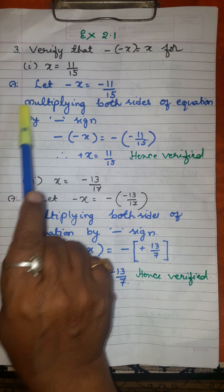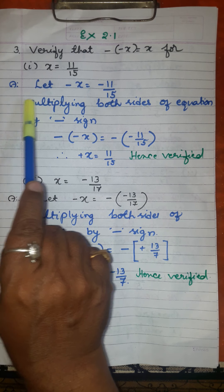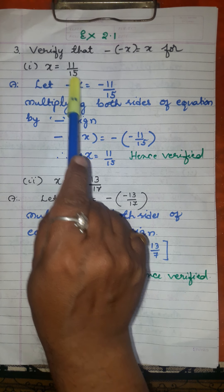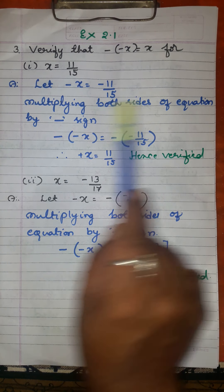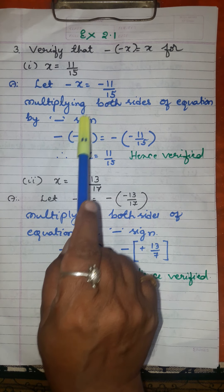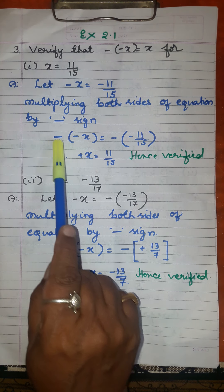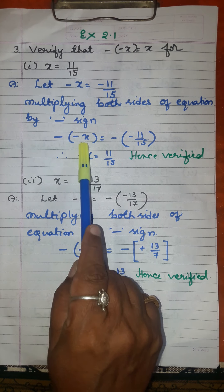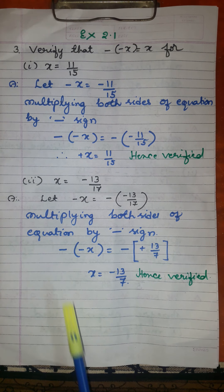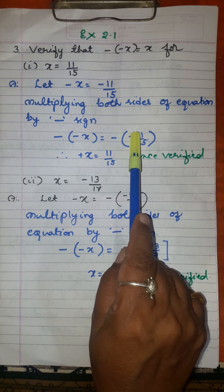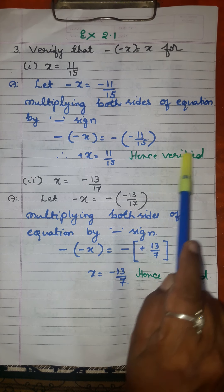Let us change the sign of the left hand side and right hand side of this equation. So minus X is equal to minus 11 over 15. Now multiply both sides of this equation by minus, because here we have minus of minus X is equal to X. Therefore, minus into minus X equals minus into minus 11 over 15. So minus into minus is plus, so plus 11 over 15. Hence, verified.